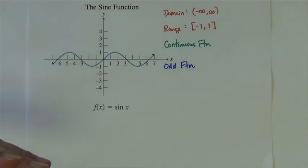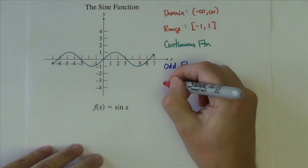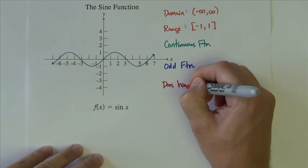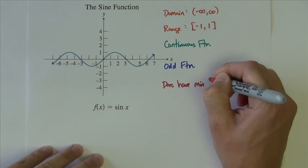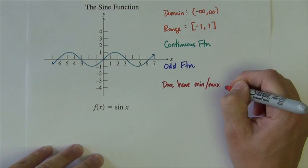It doesn't have any asymptotes. It will have, we'll write it like this, it does have minimum and maximum values.